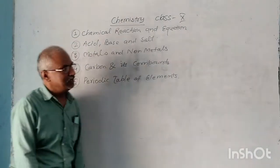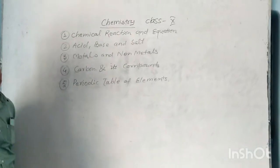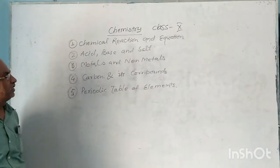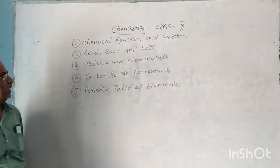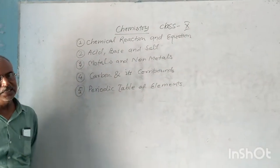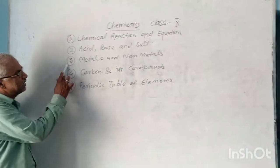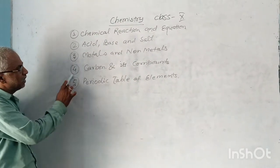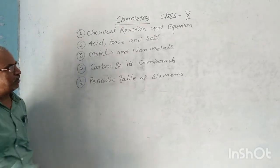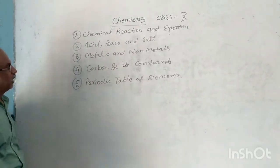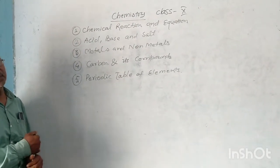Now we study chemistry in Class 10. In these chemistry chapters, there are five chapters only: Chemical Reaction and Equation, Acid Base and Salt, Metal and Non-metals, Carbon and its Compounds, and the last chapter, Periodic Table of Elements. Now we discuss about Chemical Reaction and Equation.